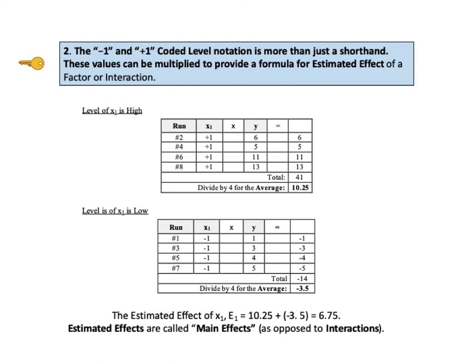KTU number 2 says the negative 1 and positive 1 coded level notation is more than just a shorthand. These values can be multiplied to provide a formula for estimated effect of a factor or an interaction. For example, the level for factor X sub 1 was high in runs 2, 4, 6, and 8. So we multiply the Y value for those runs by the plus ones that are in the X sub 1 column for those rows. Adding those 4 positive numbers, we get 41. Then we divide by 4 to get the average of 10.25. Similarly, X sub i was low in runs 1, 3, 5, and 7. So we multiply those values by the negative ones. We total these negative numbers and get negative 14. Divide by 4 to get the average, which is negative 3.5. And the estimated effect is the sum of the average values when X sub i was high, that is 10.25, and the average when X sub 1 was low, that is negative 3.5. And we get 6.75.